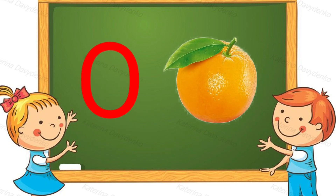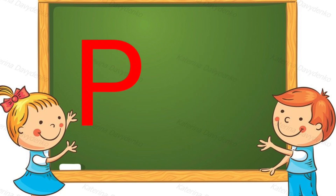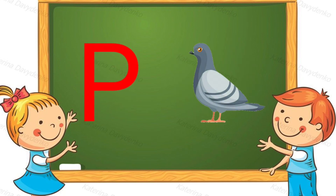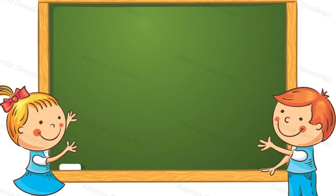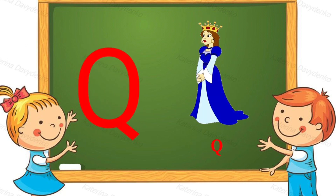O for orange, B for pigeon, Q for greening.